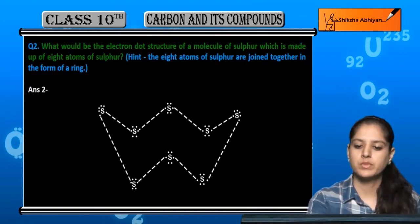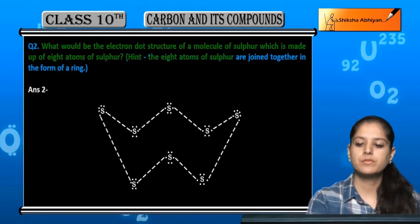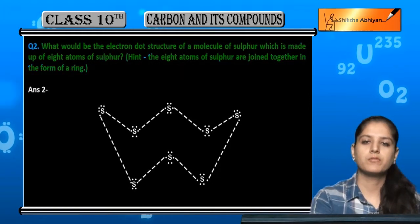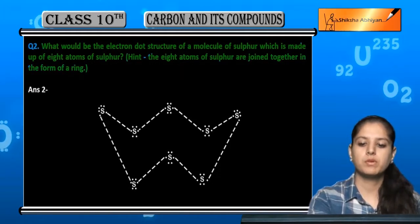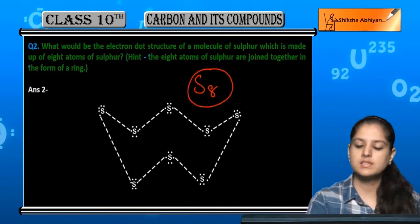So ek hint hai aapke paas - the eight atoms of sulfur are joined together in the form of a ring. Ek ring ki form mein wo joined. So sulfur ka molecule is S8 jis mein eight atoms aapas mein combined hoote hai.